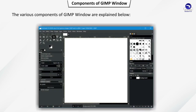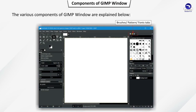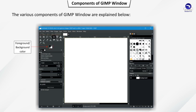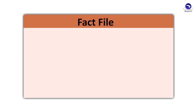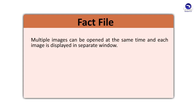Components of GIMP window: The various components of the GIMP window are Menu bar, Title bar, Ruler, Brushes, Pattern, Font tabs, Toolbox, Foreground or Background color, Tools options, Image window, and Layers palette. Fact file: Multiple images can be opened at the same time and each image is displayed in a separate window.